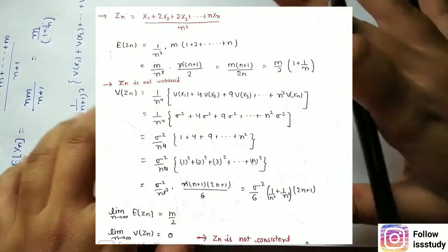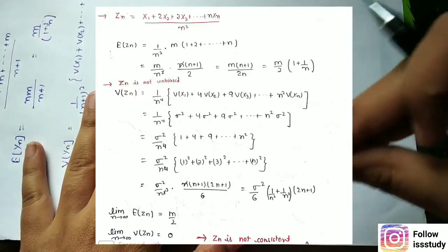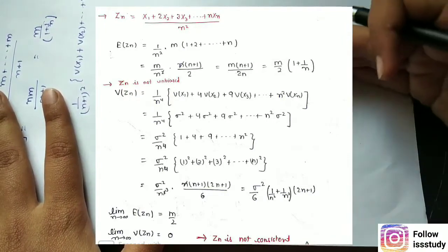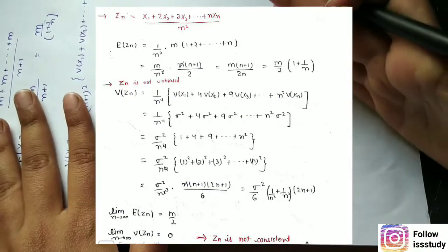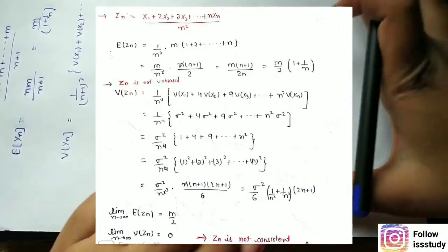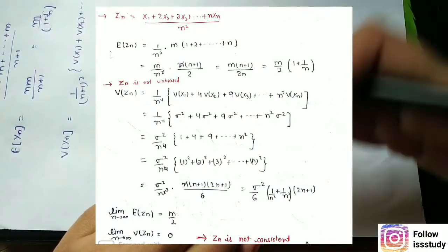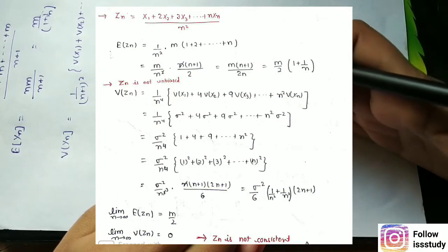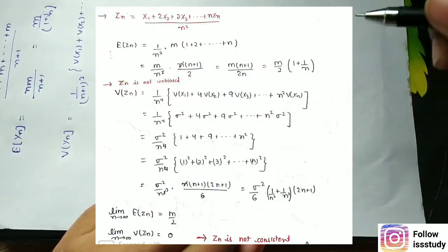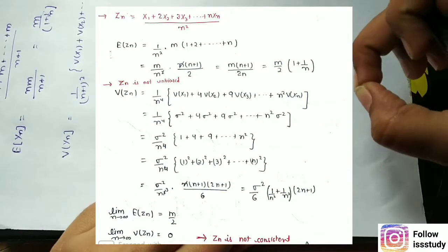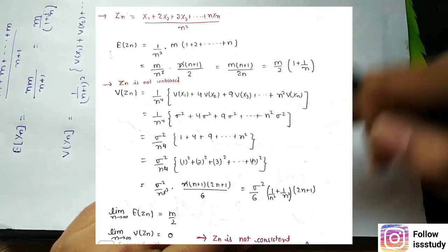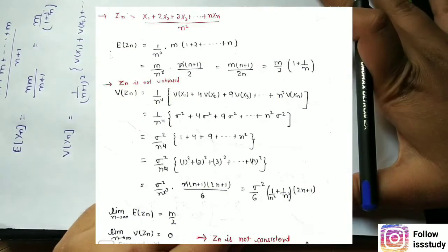I removed the variance of zn. Since x1, x2, ..., xn are independently drawn, the covariance term is 0. The variance of each xi is sigma squared. The constants 1, 2, 3, ..., n come out squared: 1², 2², 3², ..., n². After taking the common factor sigma squared, I have the sum of squares 1² + 2² + ... + n² in the numerator. Using the formula n(n+1)(2n+1)/6, I applied it, cancelled n, and obtained the variance of zn.